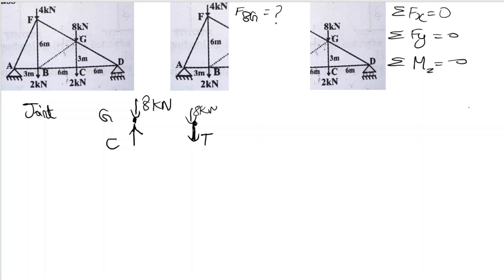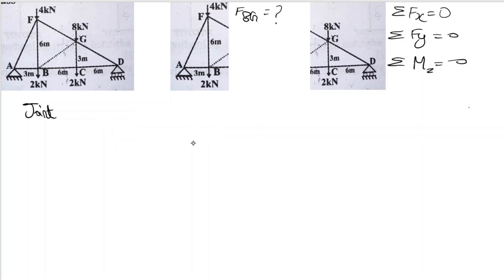If this is a tensile member, we have to pull it outward, so the arrow will point away from the joint. If compressive, the arrow points inward. We need to determine whether member BG is compressive or tensile.